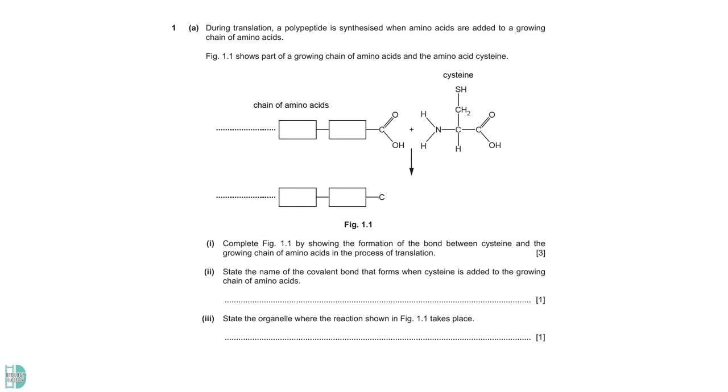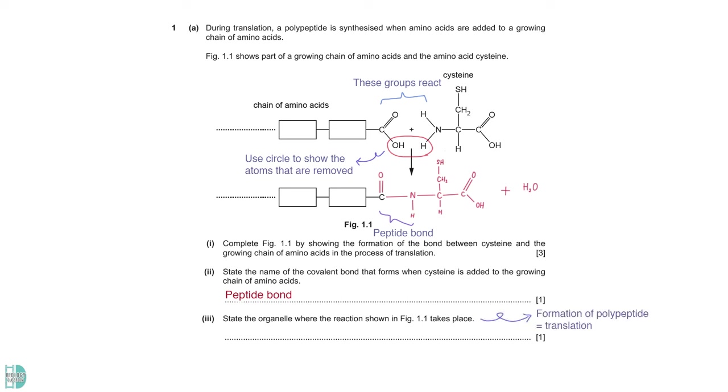In 1A, we have a diagram showing a growing chain of amino acids and the amino acid cysteine. The first question is show the formation of a bond between them. To join two amino acids, the amine group of one and the carboxylic group of another one react. One must remove OH, another one removes hydrogen. Use circles to show this. Then, a peptide bond which consists of C, O, and N forms between the C and N of the two amino acids. The removed hydrogen and OH will then form H2O together.